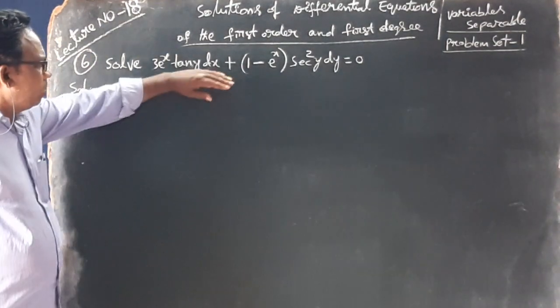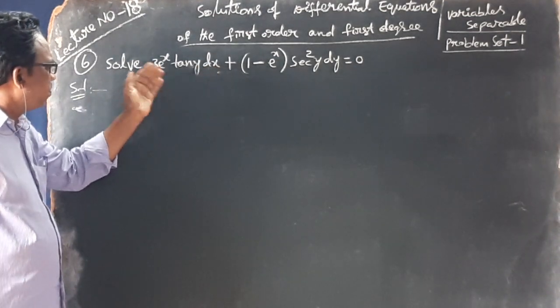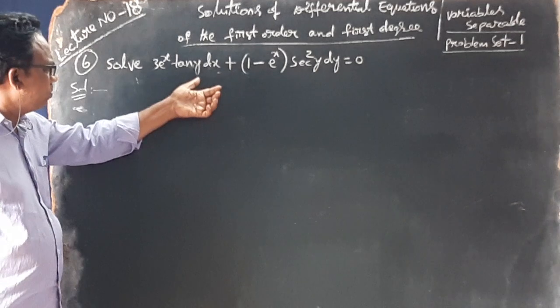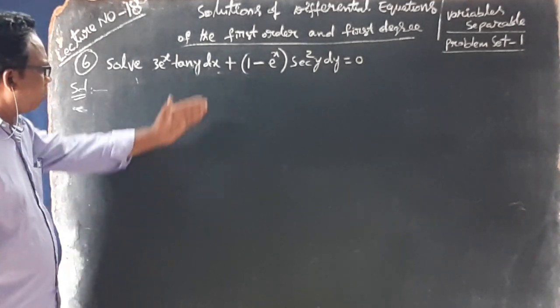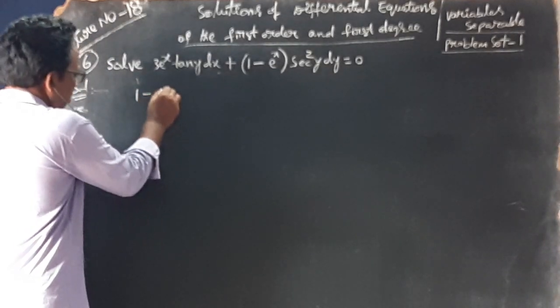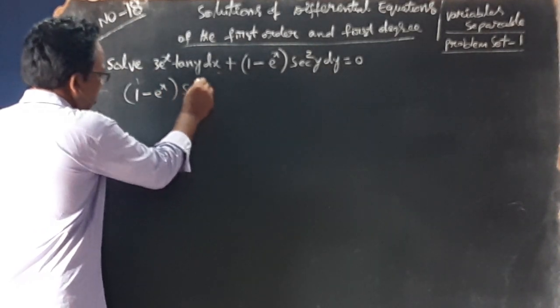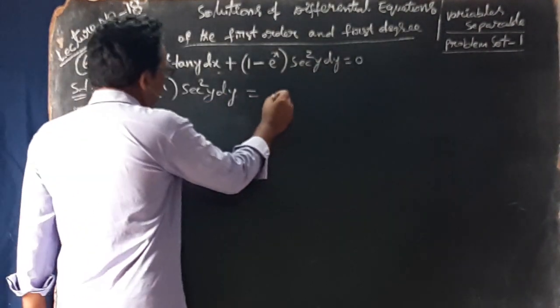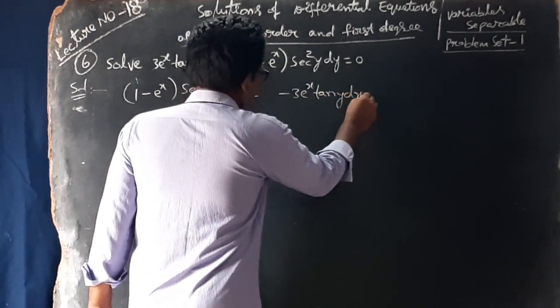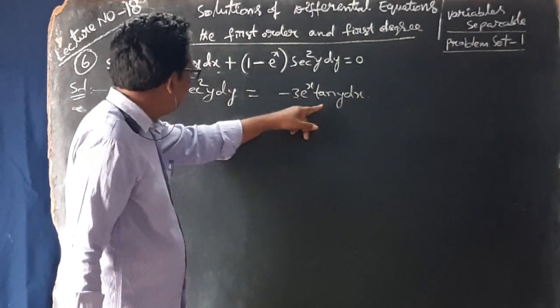Here, dy and y functions are on one side, and x and dx are on the other. We separate the variables. Writing the differential equation: 1 minus e power x into secant square y dy equals minus 3 into e power x tan y dx.